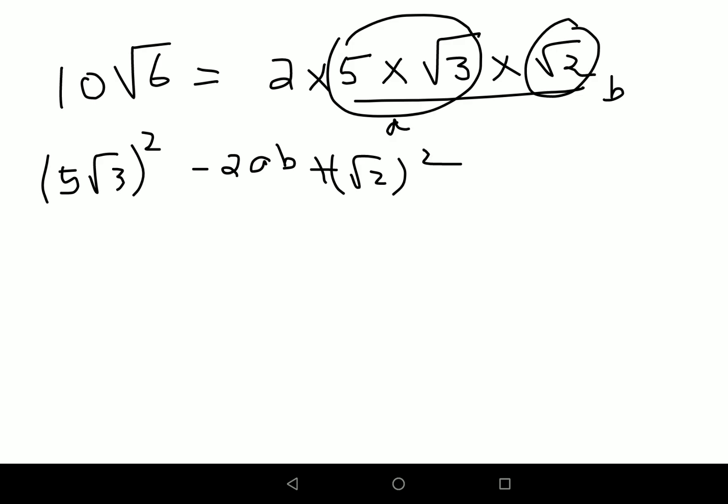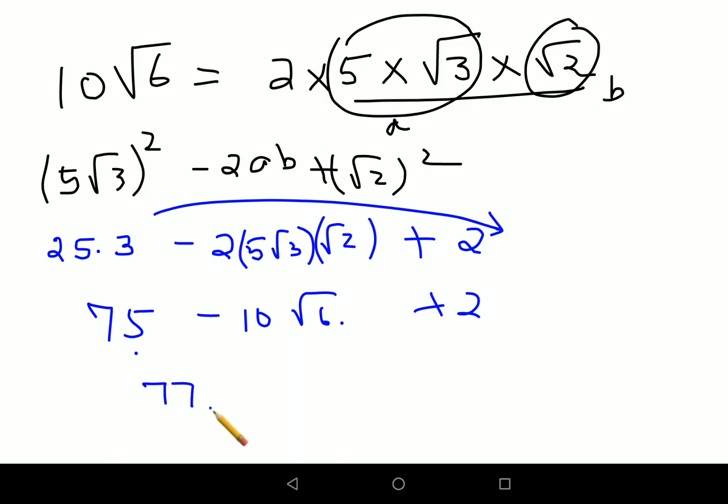So 5 squared gets you 25 into root 3 squared gets you 3, minus 2 times 5 root 3 into root 2, plus root 2 squared gets you 2. So 25 into 3 gets you 75 and plus 2. This is still 10 root 6 right? 75 plus 2 gets you 77.